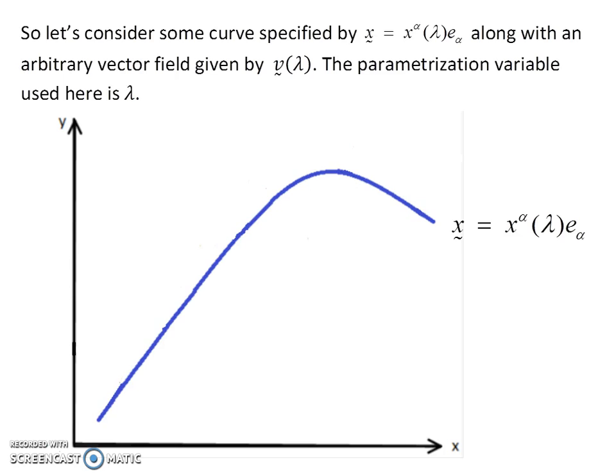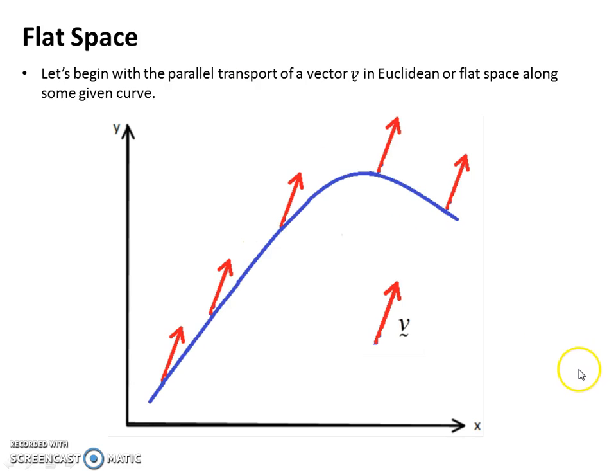So let's just consider for the moment in Euclidean space, we have some curve specified by the vector here and some arbitrary vector field. The parameterization variable here is lambda, no particular reason for lambda, it could be any. The path we're concerned with is in blue. And we've got some vector v, and we want to parallel transport it along that curve. And we're doing this at the moment in flat space or Euclidean space.